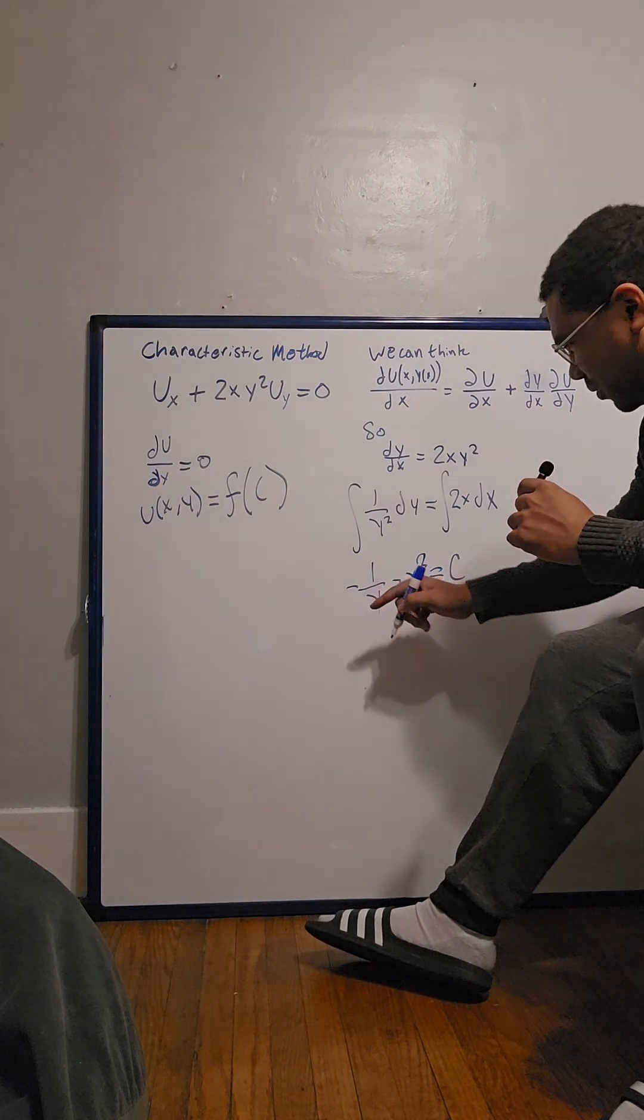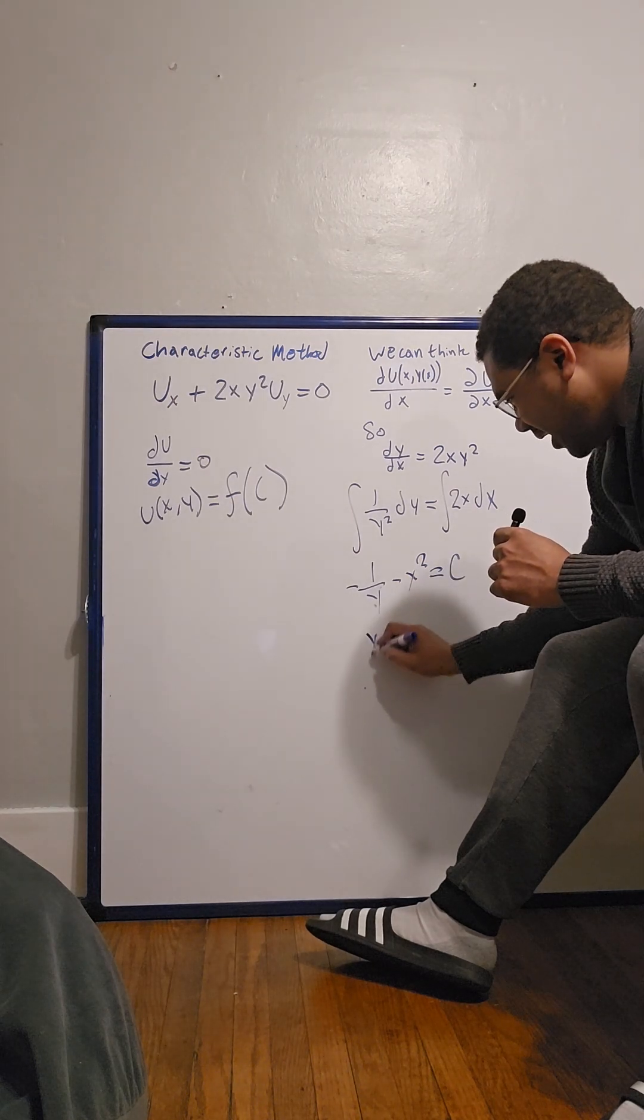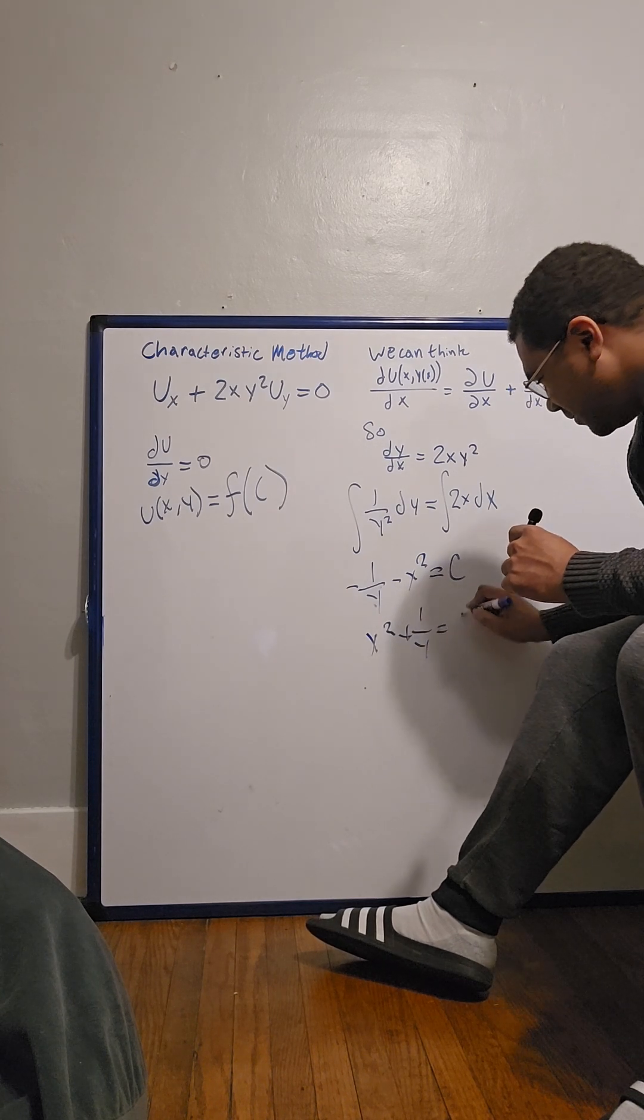The c is a constant, so we can pull out a negative and put it to the other side. So we get x squared plus one over y equaling c.